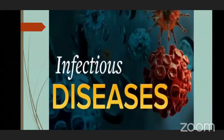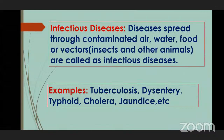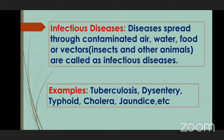Infectious diseases are diseases which spread through contaminated air, food, water, or vectors — vectors means insects or other animals like housefly. Some examples of infectious diseases are tuberculosis, dysentery, typhoid, cholera, and jaundice. These are a few examples that fall under the category of infectious diseases.